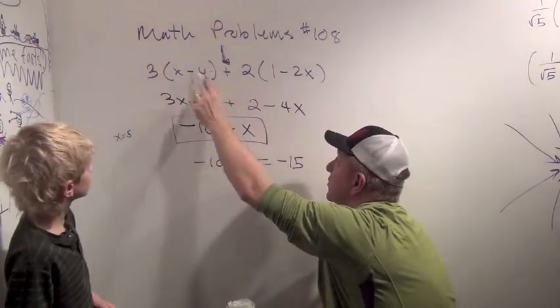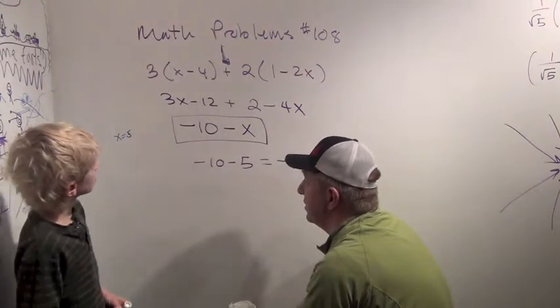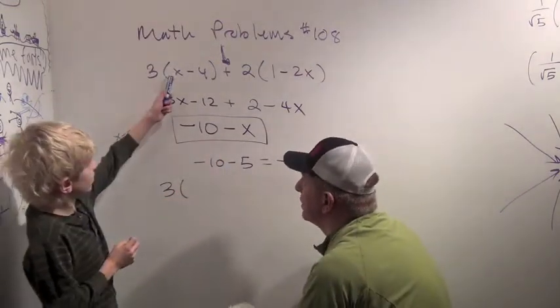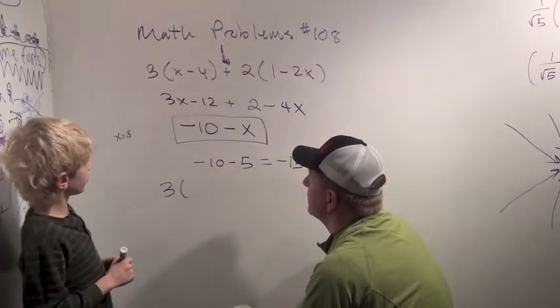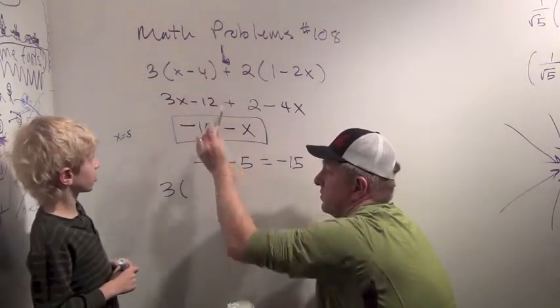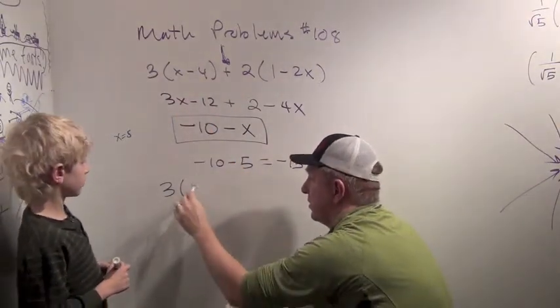Now let's do this one when x is five. Okay. So we have three times what? This is three times ten minus, it's five minus four. Which is one. So we get three times one.